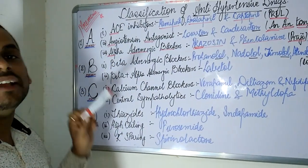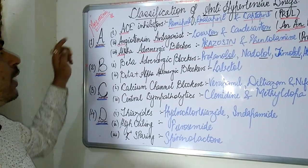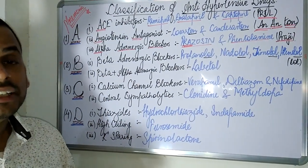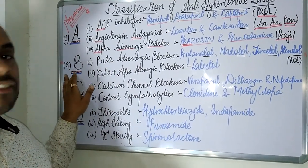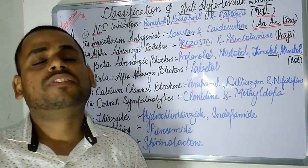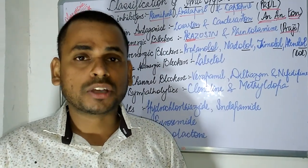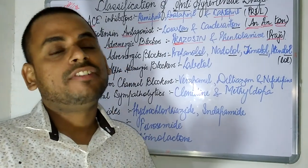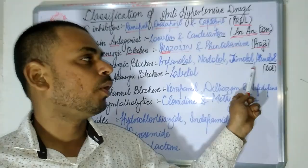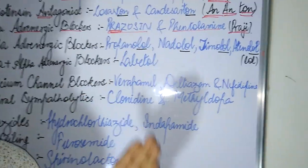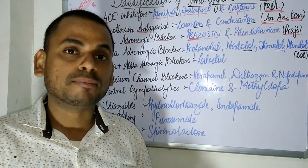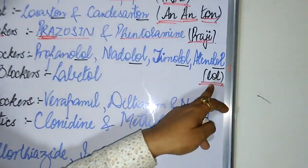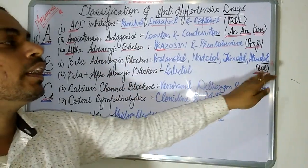So the first alphabet A is covered. Moving on to the next alphabet B — the beta-adrenergic blockers. The B letter refers to the beta-adrenergic blockers, which are widely used in the treatment of hypertension. Famous examples include Propranolol, Nadolol, Timolol, and Atenolol. If you find it difficult to remember beta blockers, just remember the suffix LOL — all beta blockers end with LOL.